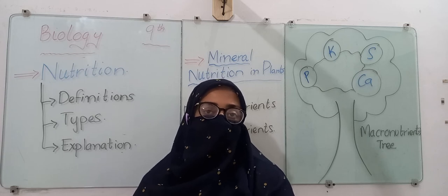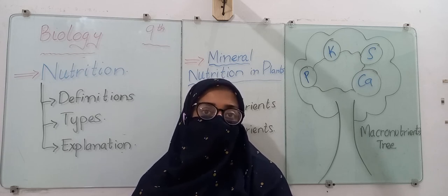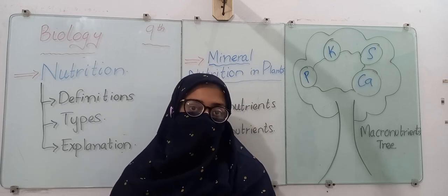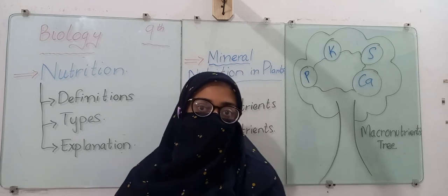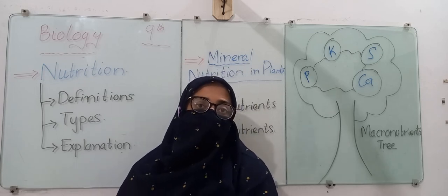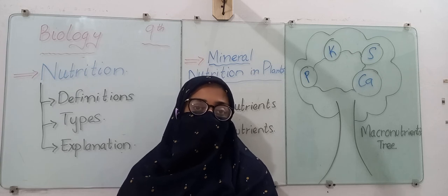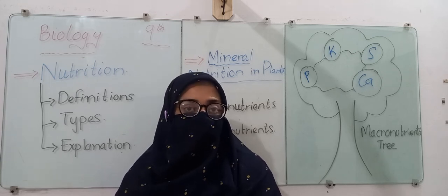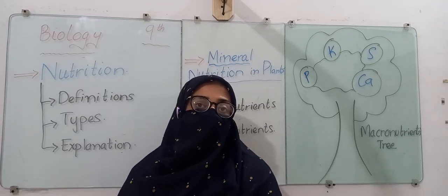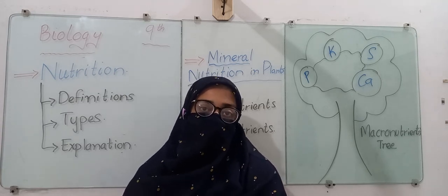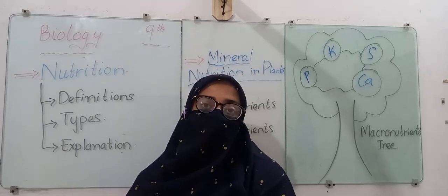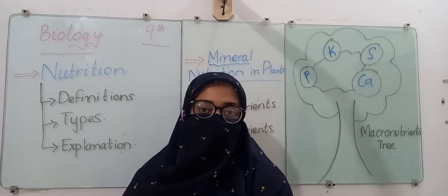Secondly, for the growing body we need food in our diet to compensate for the loss or damage of materials being done in the body. So basically, nutrition is a process in which we obtain or prepare food and then use that food for gaining energy, for growth purposes, and for the synthesis of various molecules or materials.